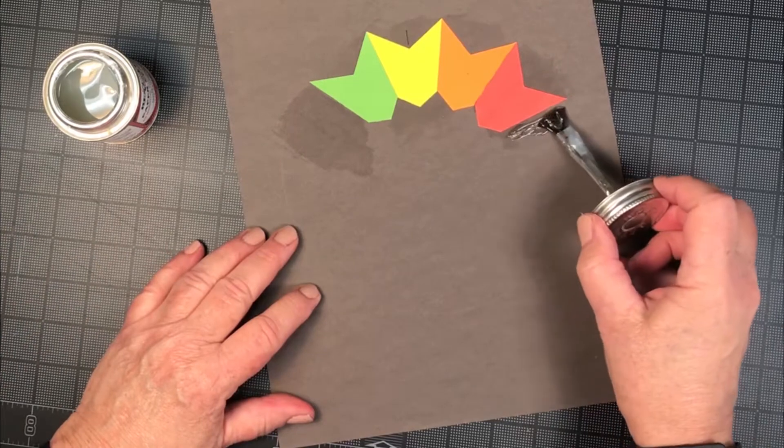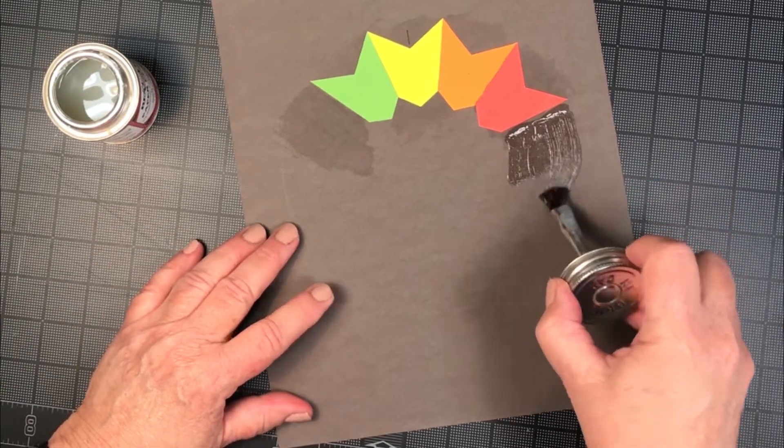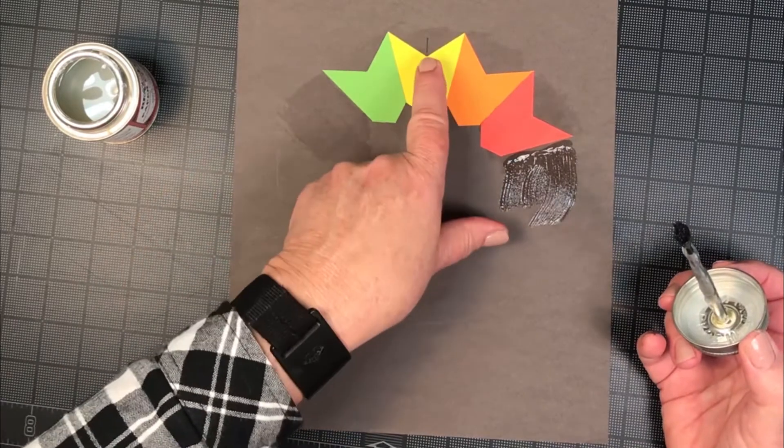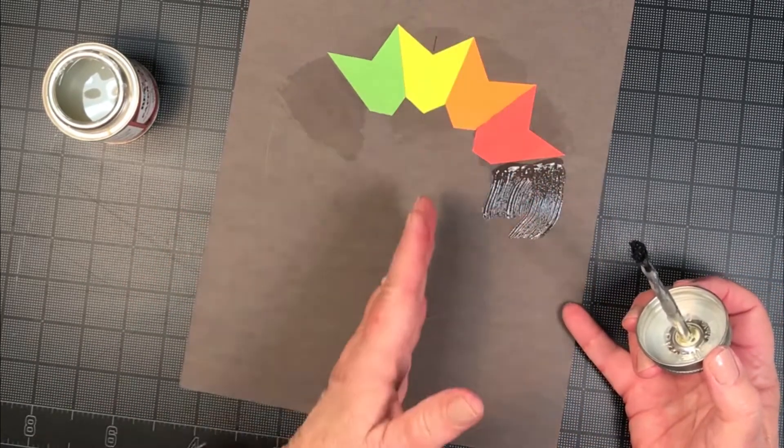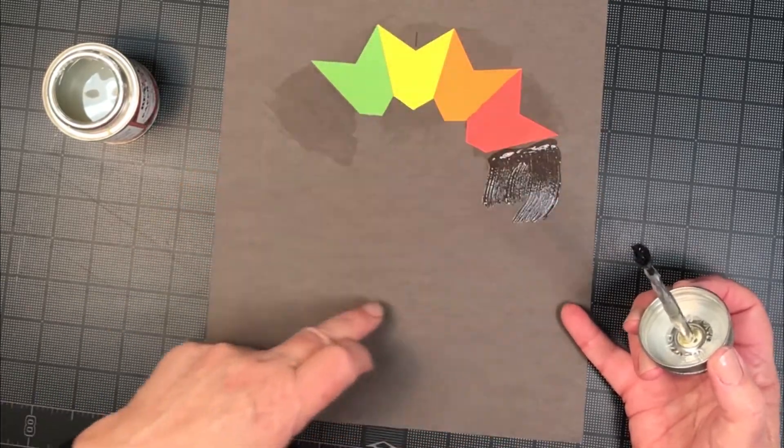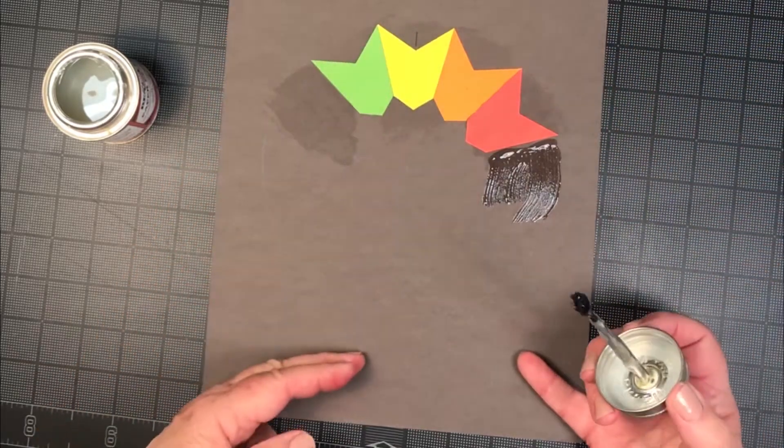Basically you want to put the rubber cement where the swatch is going to go. I've already laid out, you can see I've got a pencil line there that I'm going to erase, and that is my vertical guideline. I'm also centering this 7 inch hue circle in the center of the 9 by 12.